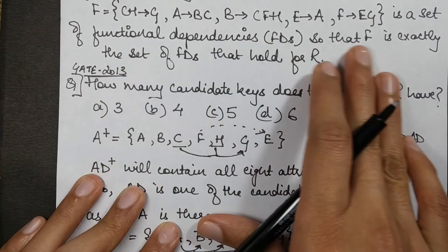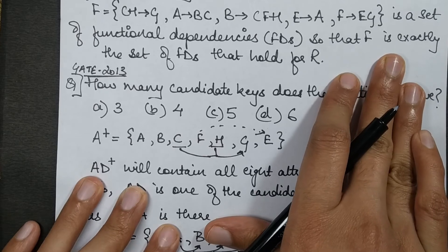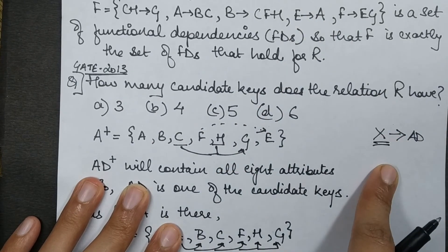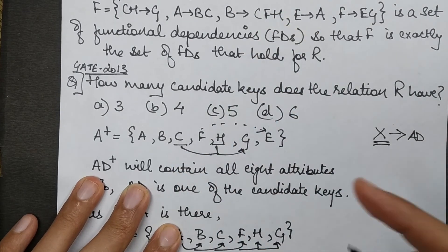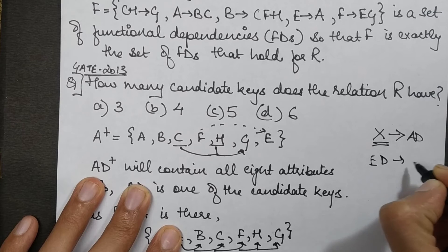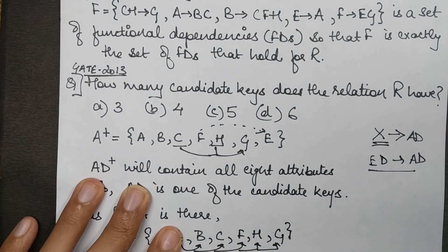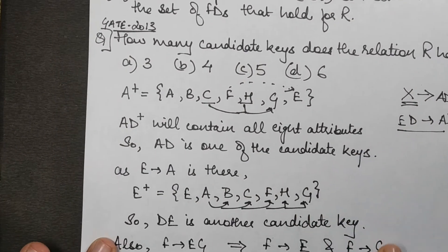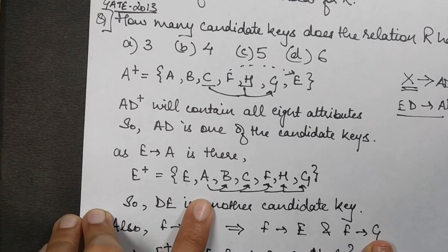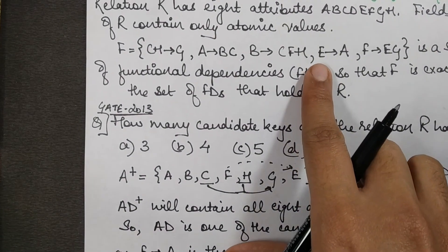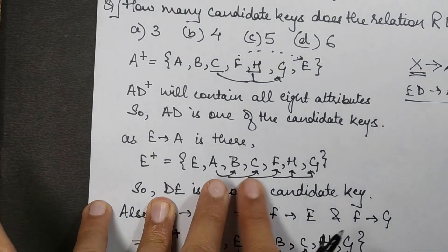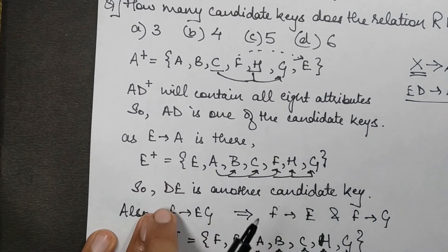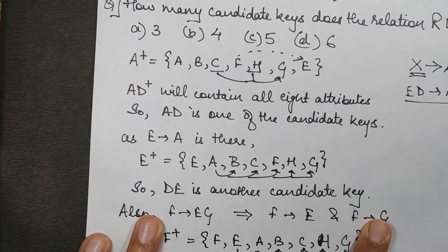Looking at the functional dependencies, we find E→A. If we concatenate D on both sides, this becomes a similar case to AD. To verify: the closure of E gives A (from E→A), and from A we get all attributes except D. Concatenating D gives us ED, so ED (or DE) is another candidate key.